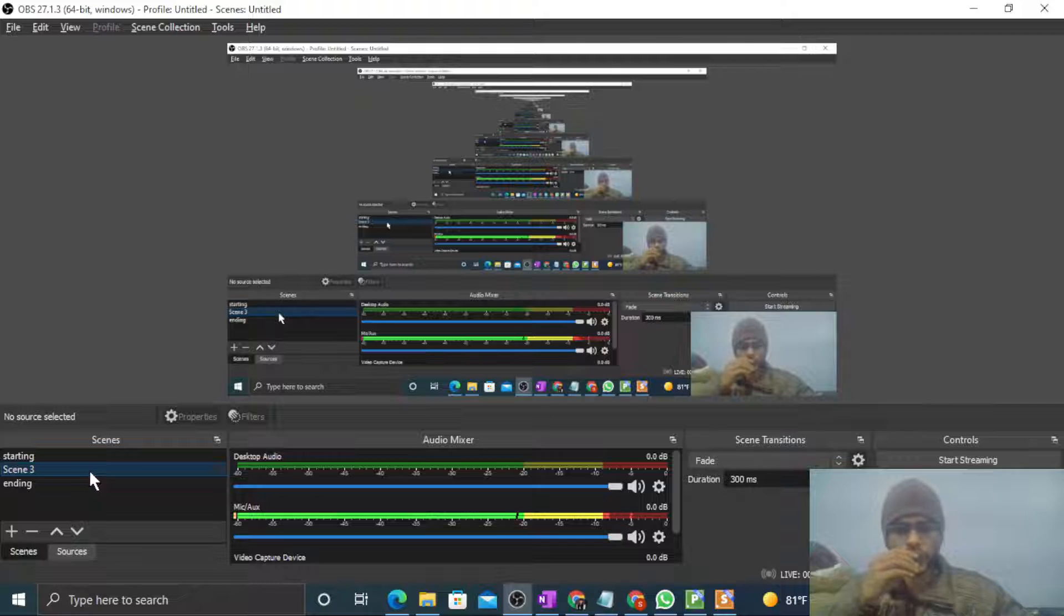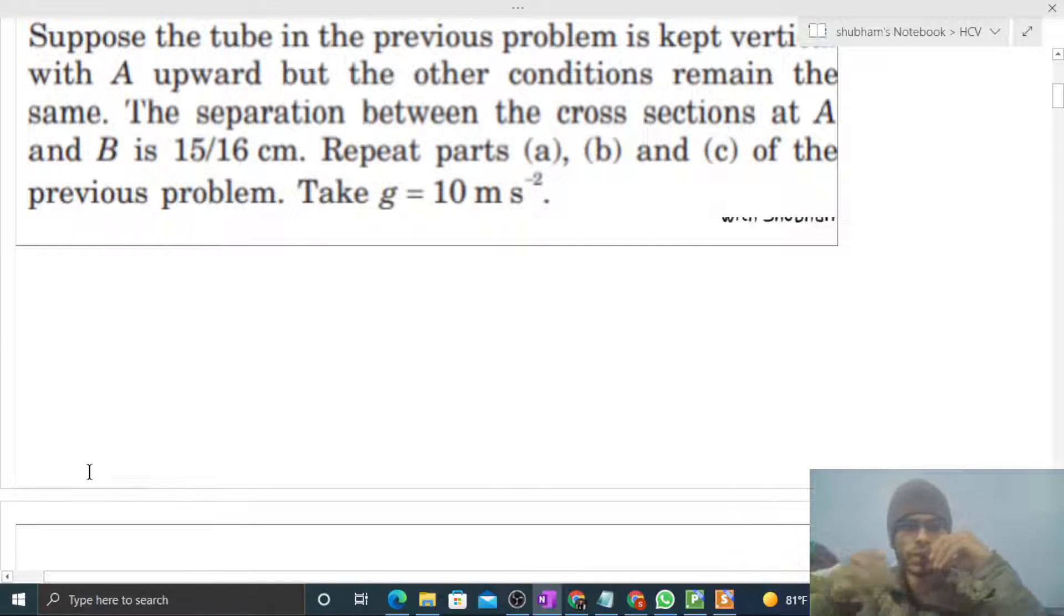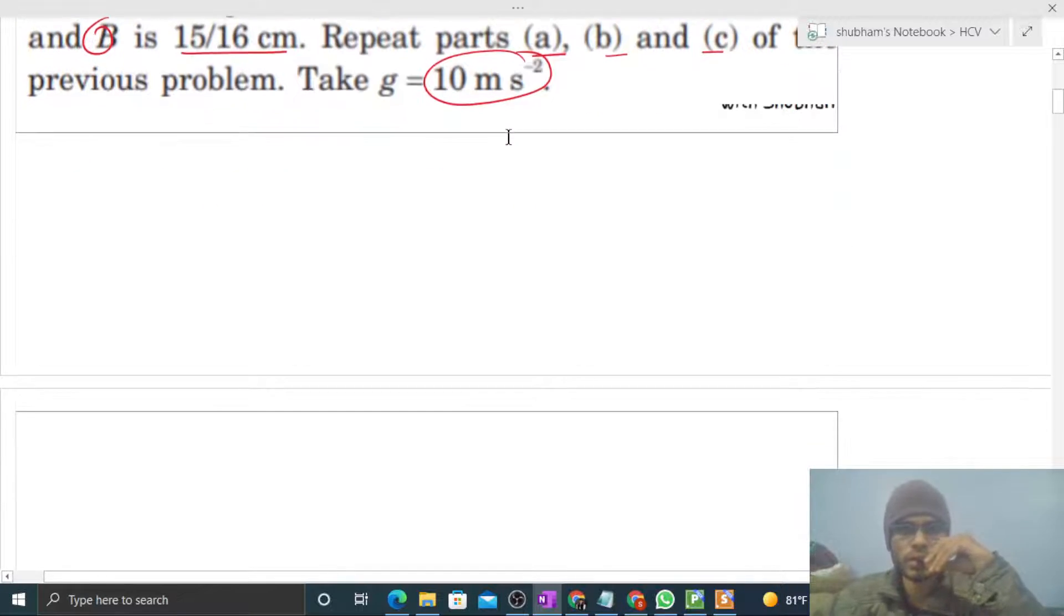Okay, hi everyone. Today let's discuss one interesting problem. It says suppose the tube in the previous problem is kept vertical with A upward, but the other conditions remain the same. The separation between the cross-sections at A and B is 15/16 centimeter. Repeat parts a, b, and c of the previous problem. Take g equals 10 meter per second squared.